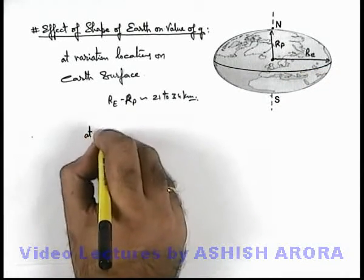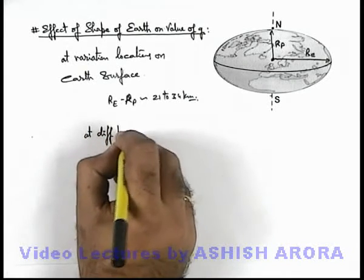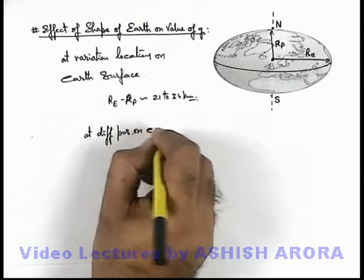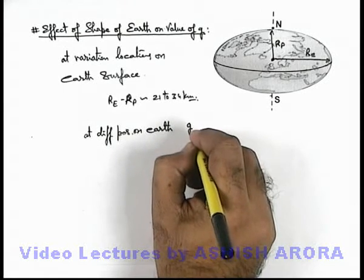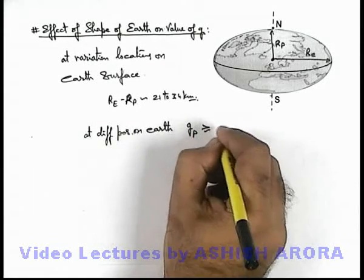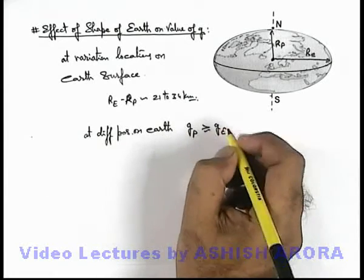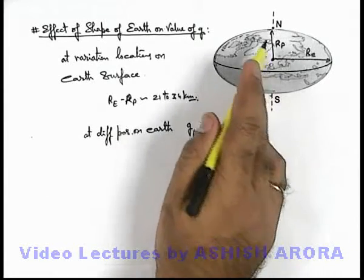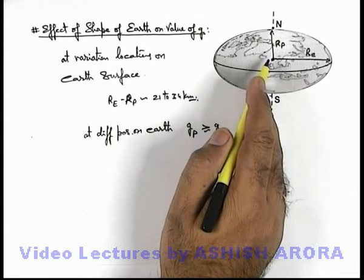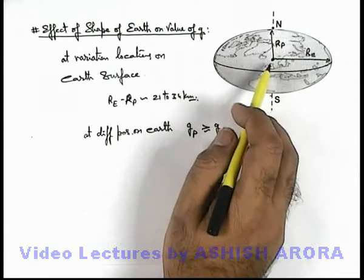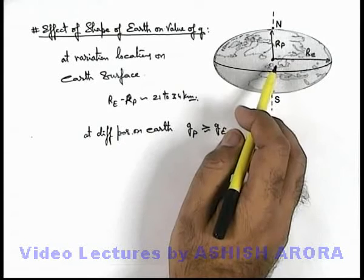At different positions on earth, gravity values at poles will be slightly more than gravity value at equator because these points are relatively closer to the center of mass of earth, or you can say these points are relatively closer to the geometric center of the body.